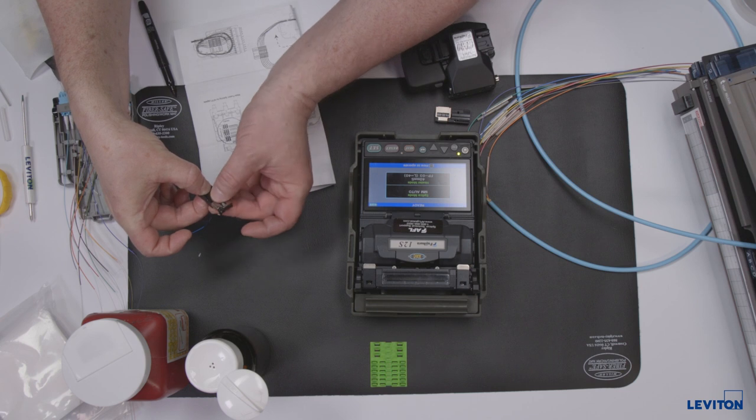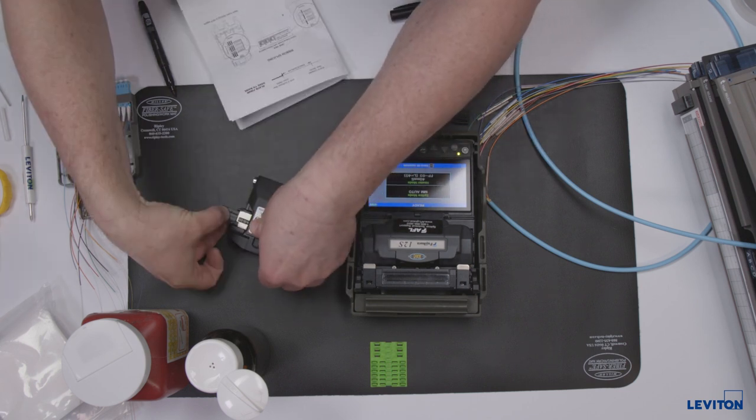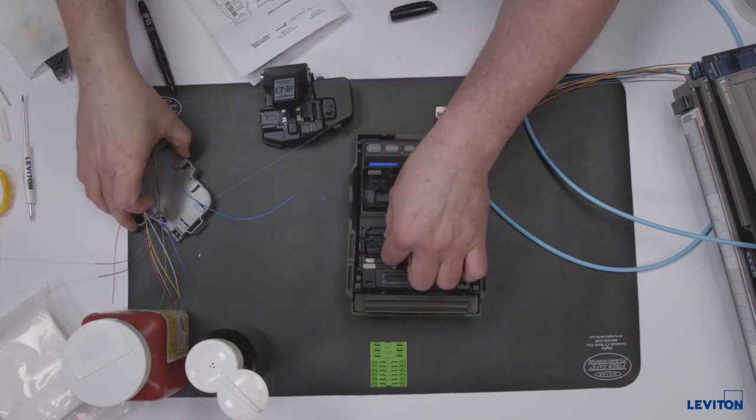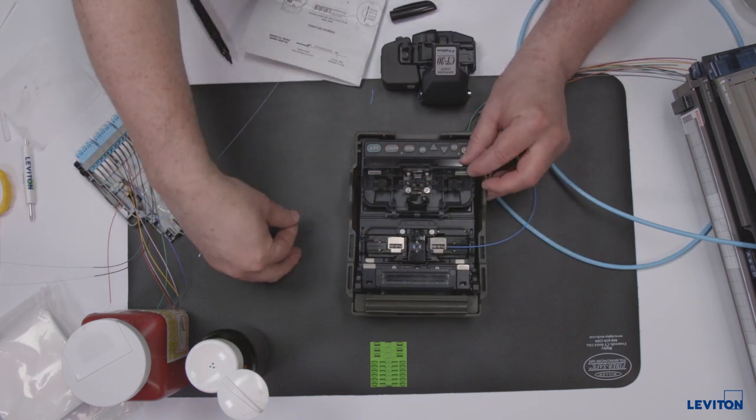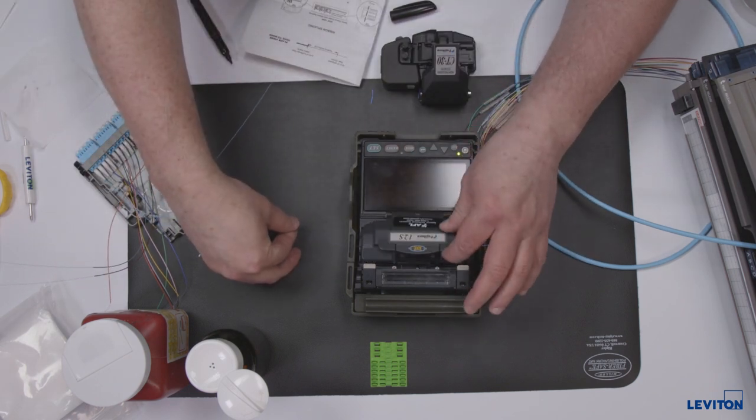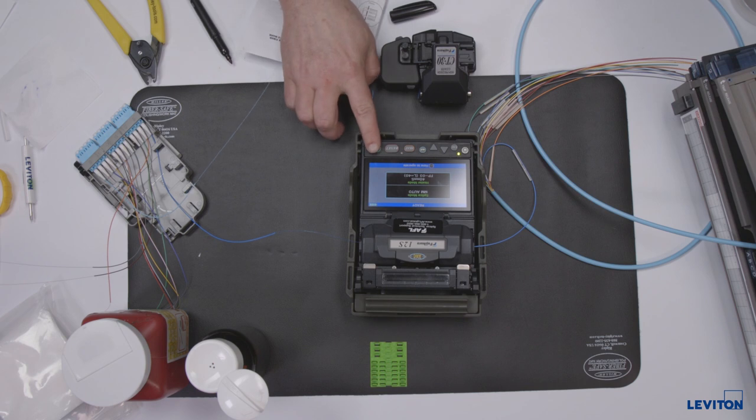Load each fiber into the appropriate fiber holder, cleave, and place the holder in the fusion splicer. Perform the fusion splice verifying acceptable loss and tension test.